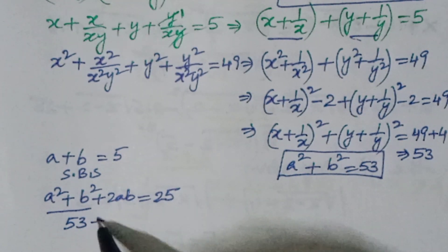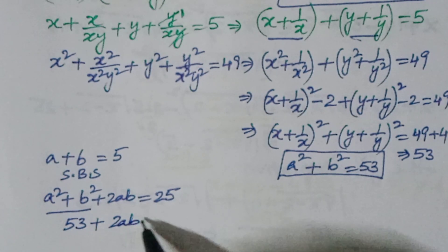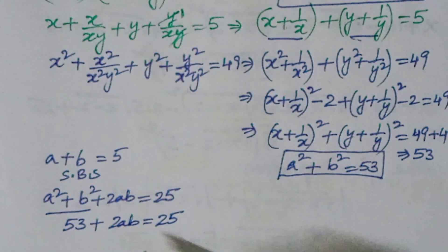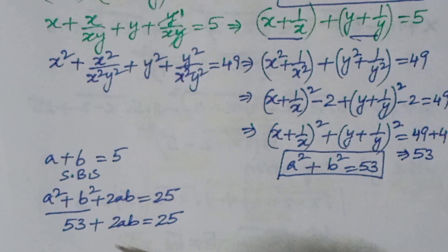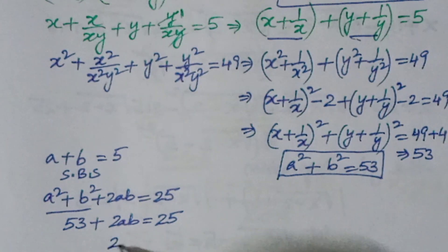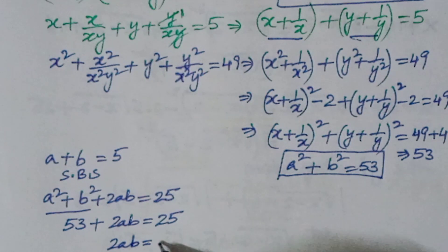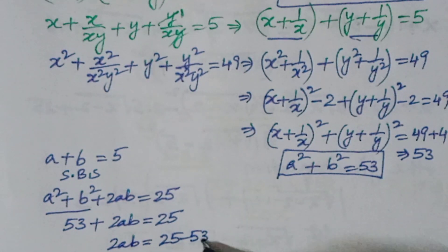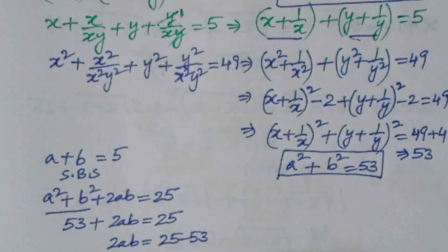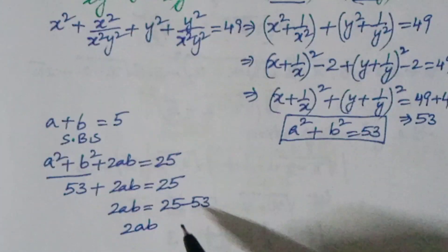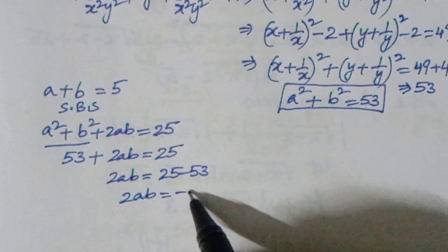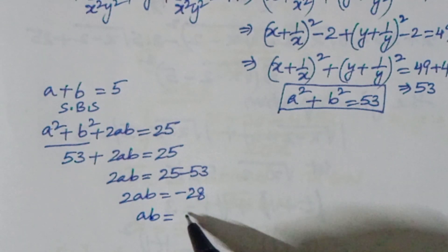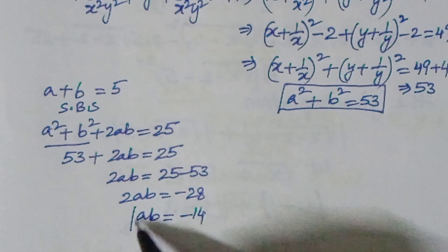From 53 + 2ab = 25, we get 2ab = 25 - 53 = -28, so ab = -14.